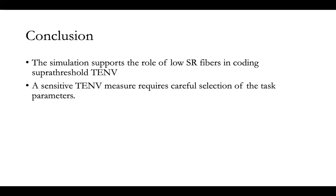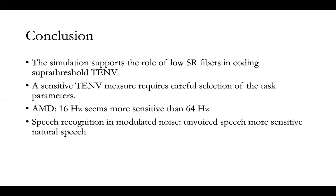Our conclusions are that through simulation, fibers with low spontaneous rates do play an important role in encoding supra-threshold envelope. When trying to identify cochlear synaptopathy using temporal envelope tasks, not all parameters are sensitive enough. For example, in amplitude modulation detection, 16 Hz modulation seems more sensitive than 64 Hz modulation. For speech tasks, we recommend using unvoiced speech recognition rather than natural speech recognition in modulated noise, because recognizing unvoiced speech relies on spectrotemporal modulation only, while recognizing natural speech uses both spectrotemporal envelopes and pitch cues, introducing a lot of redundancy.